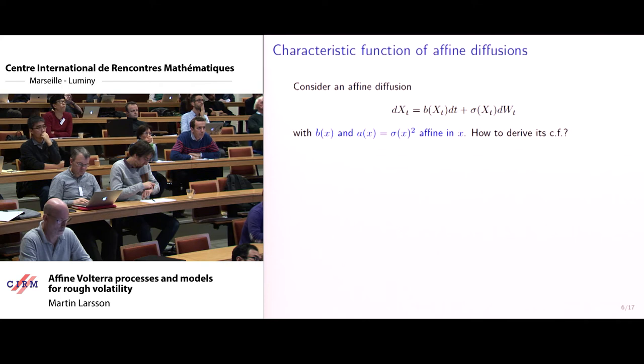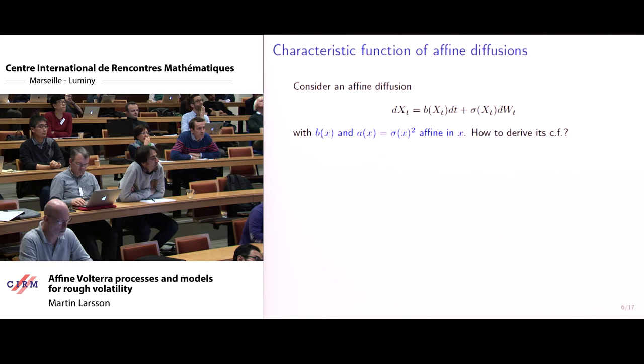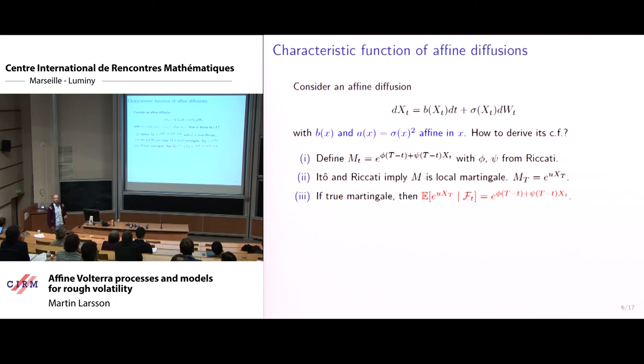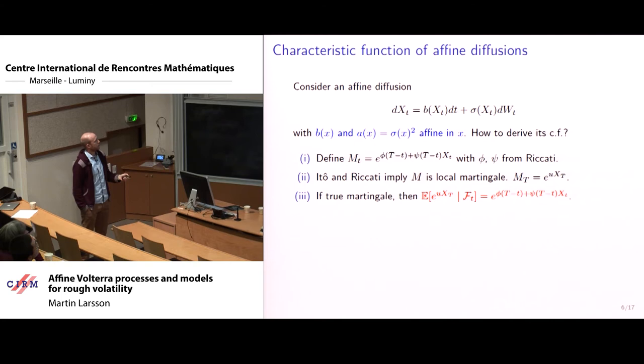But this proof relies on the scaling limit of Hawkes processes and in some ways comes as a by-product of other things such as obtaining existence of solutions to this equation in the first place. And so we were wondering if it might be possible to analyze this model on the level of the limiting stochastic equation. We want to directly study this equation here and obtain existence, uniqueness, prove this type of result, and so forth. In the hope that this would not only hopefully recover what they did, but also ideally get more general statements such as conditional characteristic functions here, or characteristic functions of the joint process consisting of the log price and the squared volatility.